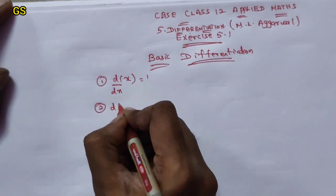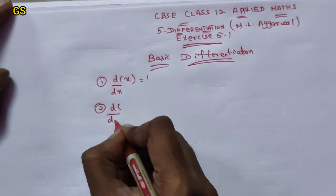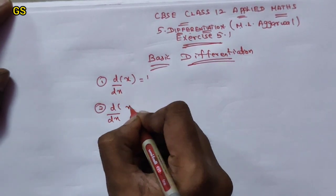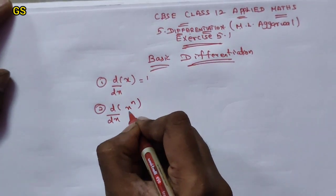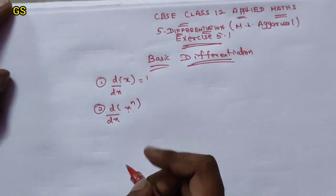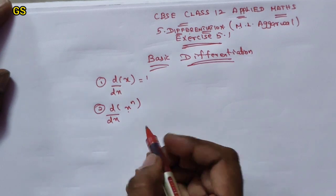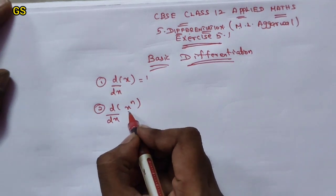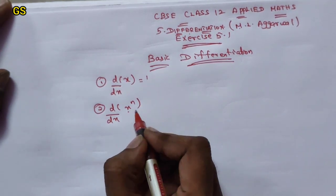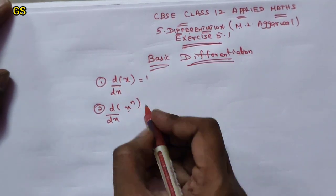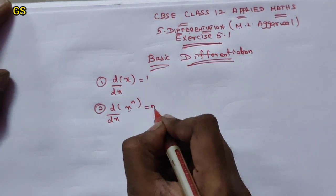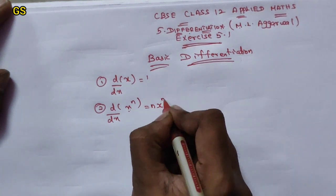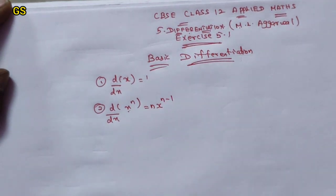Second formula: Differentiation of x power n. You might confuse the x, so note: x is n here. The result is n into x power n minus 1.